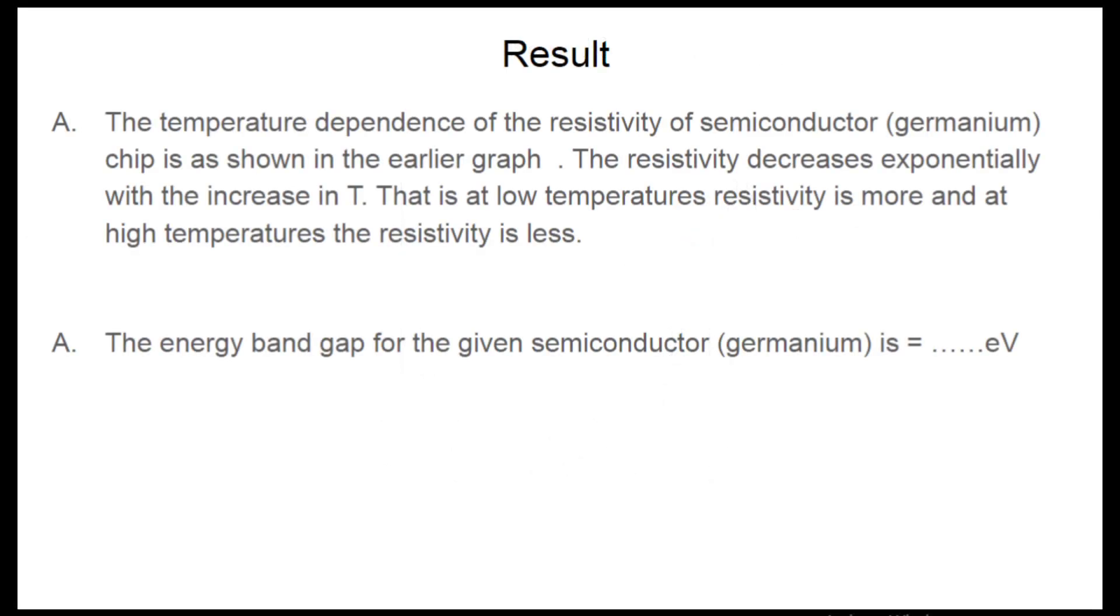In this experiment, you are going to find out the temperature dependence of the resistivity of a semiconductor, which in this case is germanium. You will find that the resistivity decreases exponentially with the increase in temperature. That is, at low temperature resistivity is going to be more, and at high temperature the resistivity is going to be less.